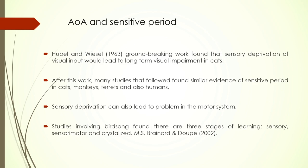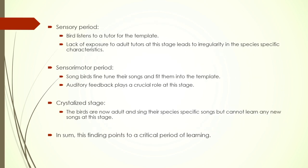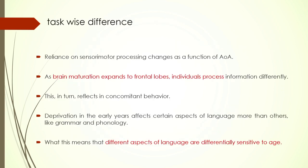We have already talked about sensitive period and critical period before. So far we have seen that age of acquisition of words matters — early-learnt words versus late-learnt words are processed in two different parts of the brain, corresponding to the areas that develop early versus late. Similarly, different kinds of tasks have also found differences.